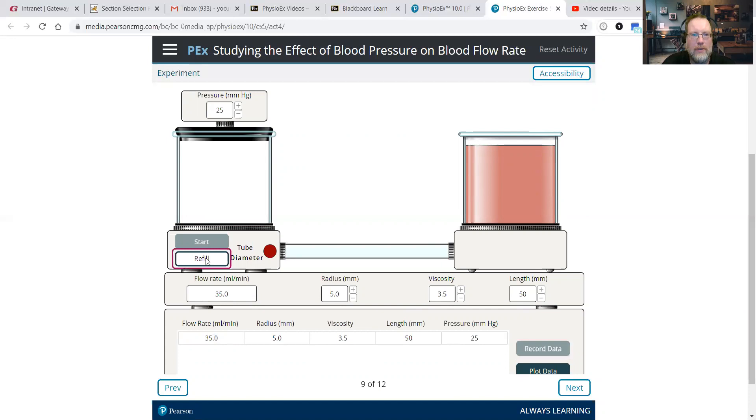Let's refill, and as that refills, we're going to bump the pressure up to 50. And we see flow rate increases as we increase pressure. Notice it doubled. We doubled the pressure. So we're going to go up to 75. Record data. Refill.